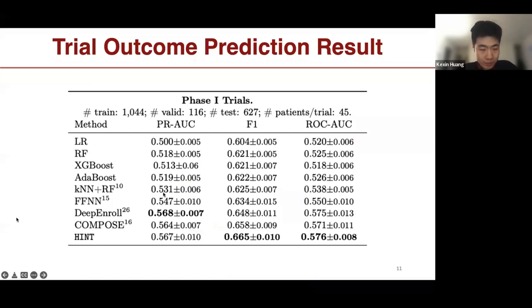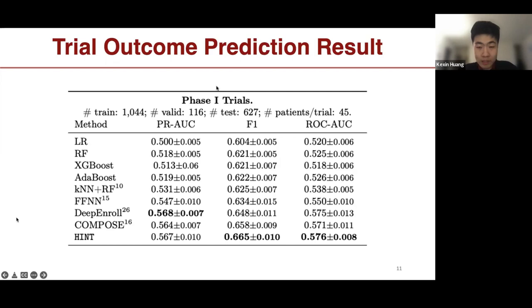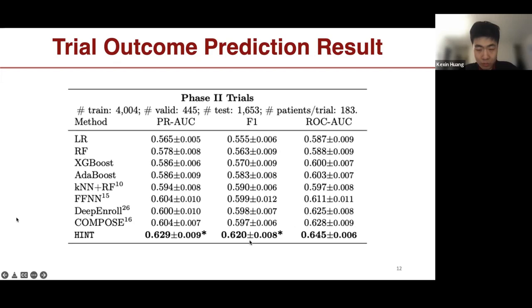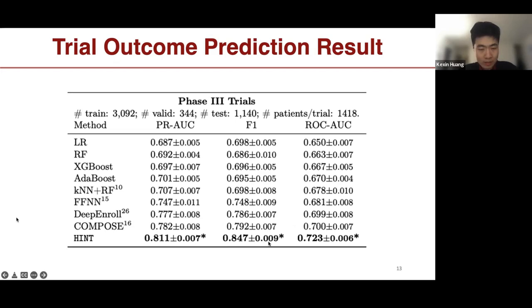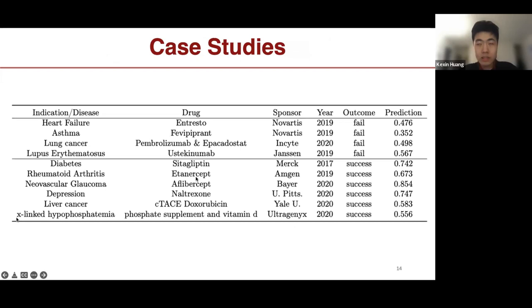Since there is no prior work for this dataset, we build our own baselines. We compare with basic machine learning approaches and two deep learning-based models designed for trial-patient matching, borrowing their architecture and adding the necessary information. For phase one trials, our model outperforms the baselines but still has room to improve. Phase two shows similar performance, and phase three trials show consistently better performance across all metrics.